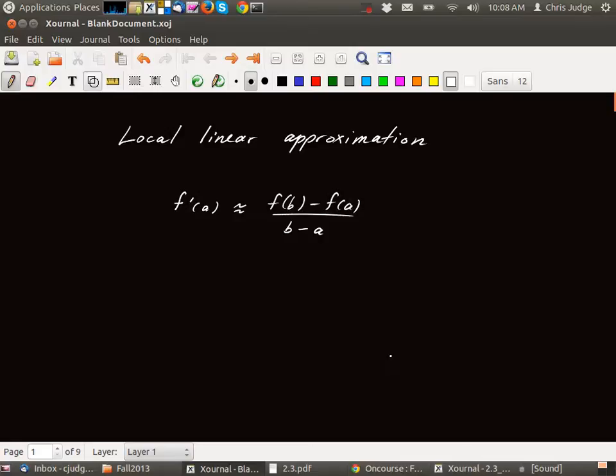Hi, in this video I want to talk about local linear approximation. Local linear approximation is based on the fact that the average rate of change is approximately the derivative when b is close to a.